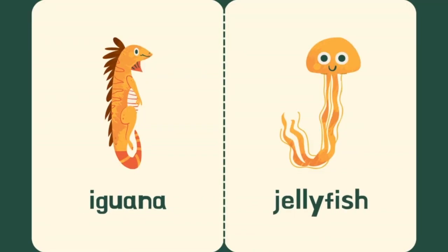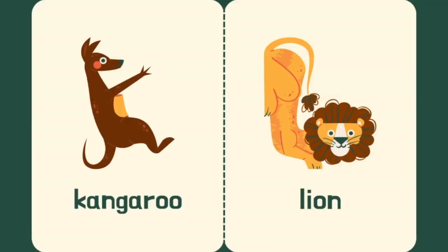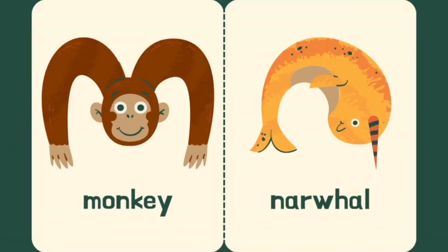J is for Jellyfish. K is for Kangaroo. L is for Lion. M is for Monkey.